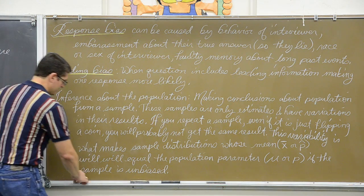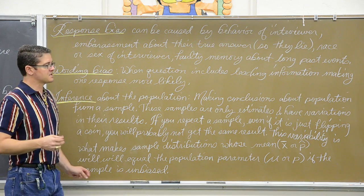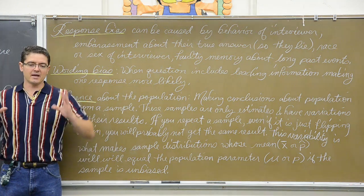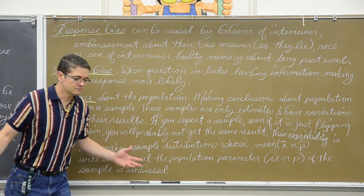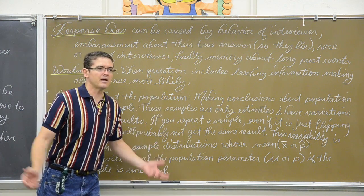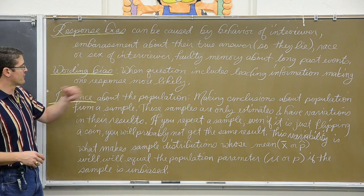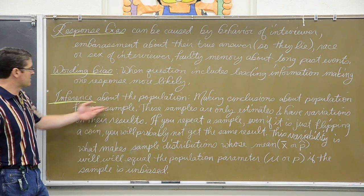And then we have this idea of inference. This is a huge concept. Inferencing is what statistics is all about. We take small samples, we analyze that sample, we draw conclusions, and then we sort of inference that, or make a conclusion about the entire population based on what we saw in the sample. So an inference of the population is making conclusions about the population from a sample.